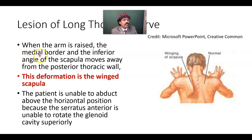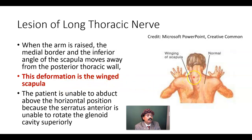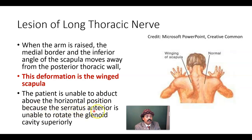When the arm is raised, the medial border and the inferior angle of the scapula move away from the posterior wall. In a patient with winged scapula due to paralysis of the long thoracic nerve, the medial border comes out of the chest wall — it is very prominent, especially at the inferior angle and the anterior medial border. The patient is unable to abduct above the horizontal position because the serratus anterior is unable to rotate the glenoid cavity superiorly, so abduction is restricted to 90 degrees and does not go beyond.